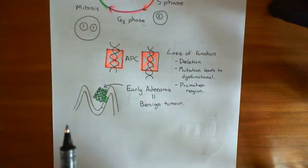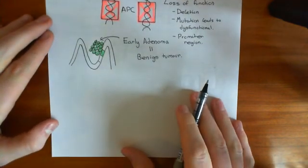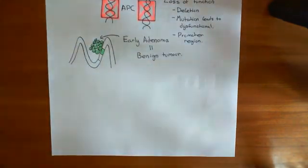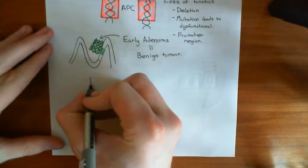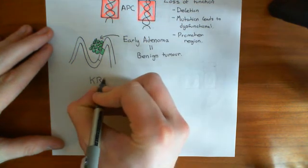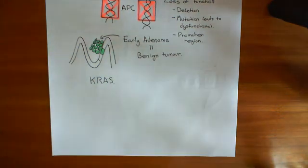What happens next is one of them is unlucky enough to get another mutation. Out of these green cells, one of them is unlucky enough to go through the next stage of the process of going towards colorectal carcinoma. The next stage is to get a gain of function mutation in a protein known as KRAS. We now need to discuss what KRAS does, and for this we need to look at the growth factor receptor pathway. But we'll do that in the next video.